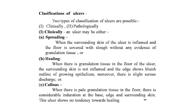There are two types of ulcer classification: clinical and pathological. Clinically, an ulcer may be spreading, healing, or callous. Spreading: surrounding skin is inflamed, floor covered with slough without granulation tissue. Healing: granulation tissue present in the floor, surrounding skin not inflamed, edge shows bluish outline of growing epithelium, slight serous discharge. Callous: pale granulation tissue in the floor, considerable induration at the base, edge and surrounding skin — these ulcers show no tendency towards healing.